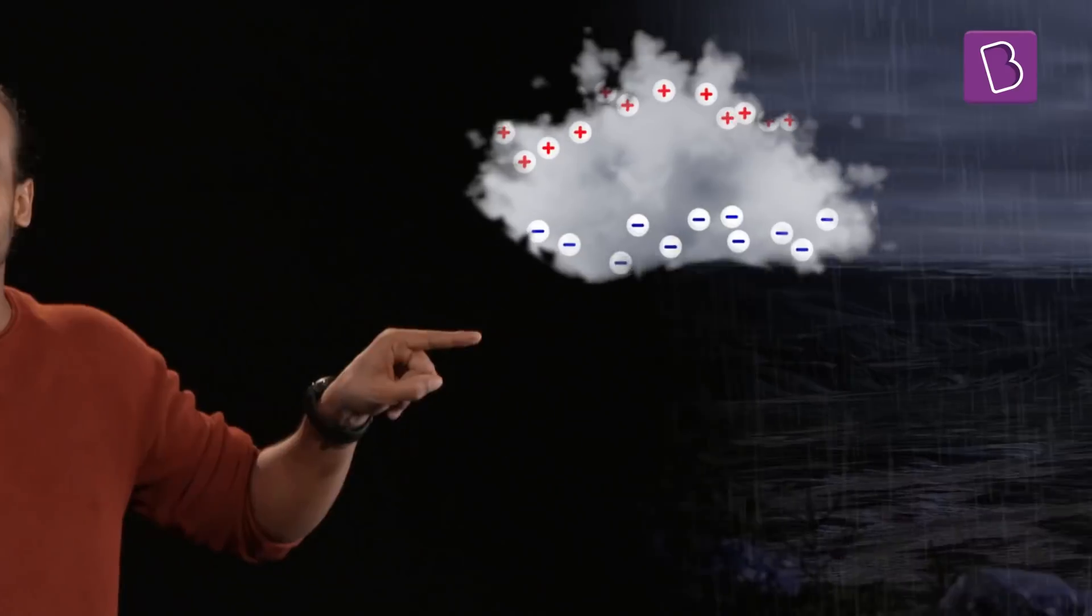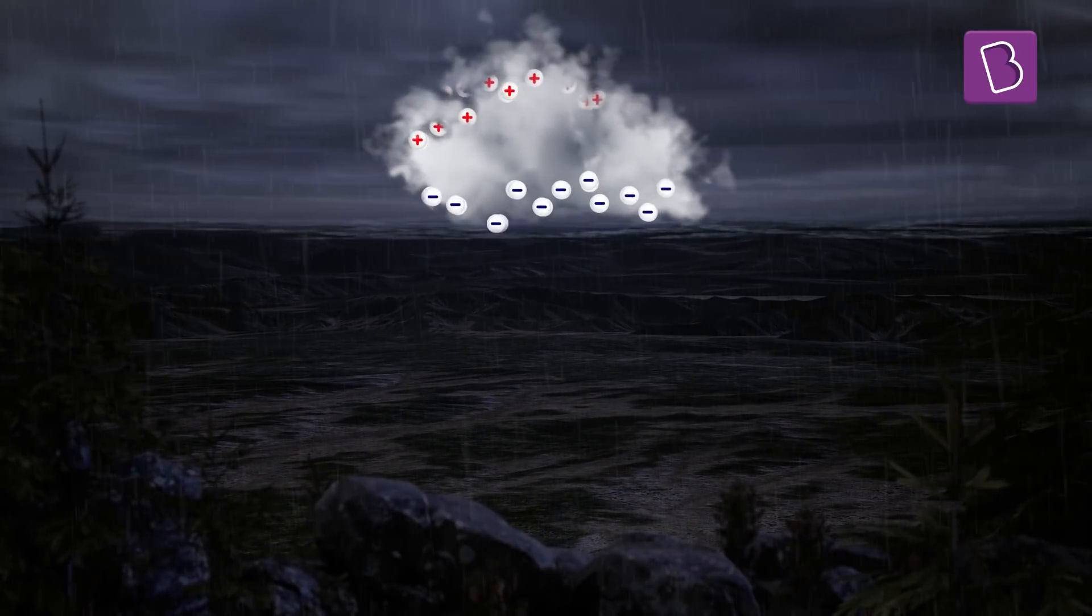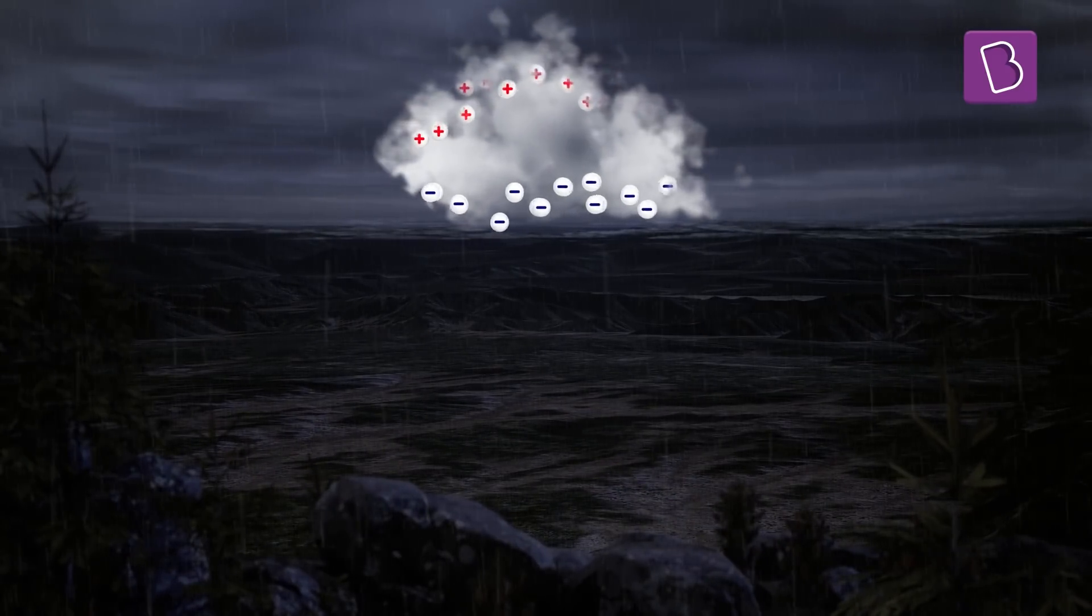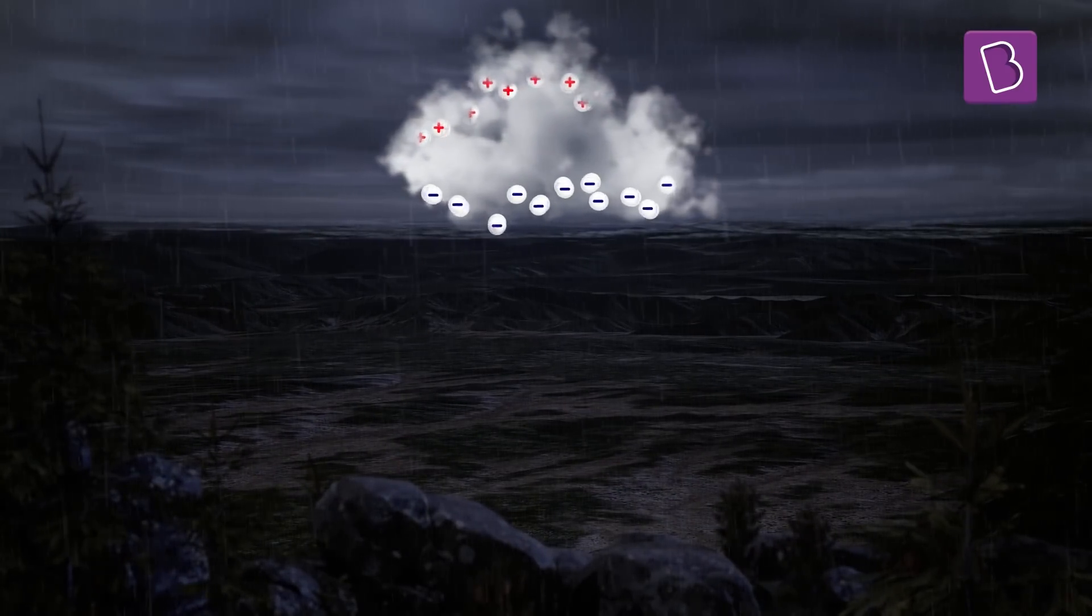The same thing at a larger scale is happening in the clouds. So far, we know what is causing the friction. Once static charges are created, the positive charges journey their way up and the negative charges settle at the bottom. These charges are eagerly waiting for the closest uncharged surface.